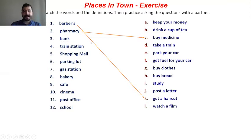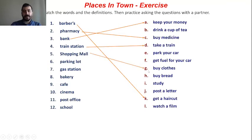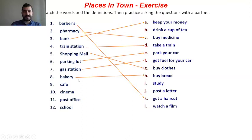What about the third one? Bank — we keep our money at the bank. Train station — you take a train at the train station. Shopping mall — you buy clothes at the shopping mall. You park your car in the parking lot. At the gas station you get fuel. You buy bread at the bakery.